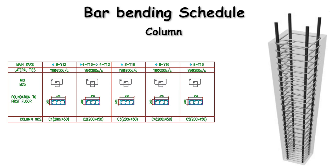Let us start with the column reinforcement details. If you look into this table, we have the column reinforcement details — it is mentioned as foundation to first floor. The concrete mix is M25, lateral tie reinforcement is given here, main bar reinforcement is given here, and this is the reinforcement arrangement in the column.